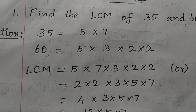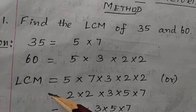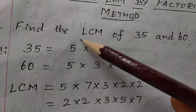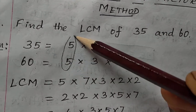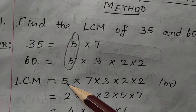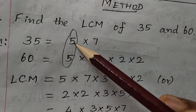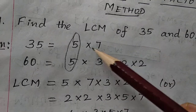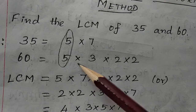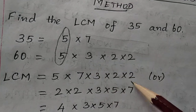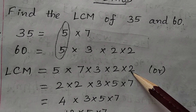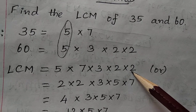LCM is the product of all factors, but common factors should be taken only once. 5 is the common factor of 35 and 60, so write it only once. From 35 we have 7 left over. So LCM = 5 × 7 × 3 × 2 × 2. The product of this expression is the LCM of the given 2 numbers.